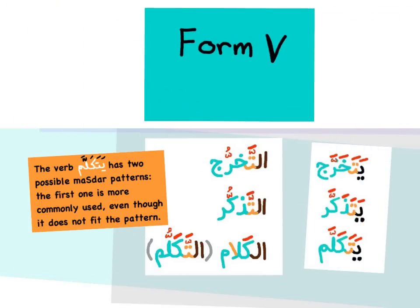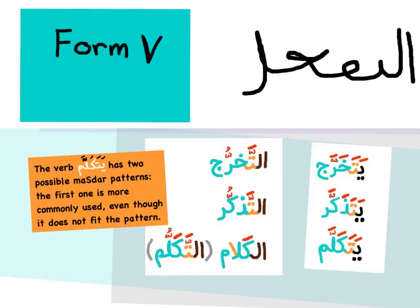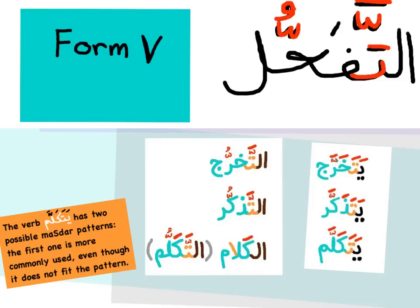Form 5 Mazdar pattern is Al-Tafa'ul. Examples: يتخرج (he graduates) → التخرج (Al-Takharruj — to graduate/graduation); يتذكر (he remembers) → التذكر (Al-Tadhakkur — to remember/remembering). يتكلم (he speaks) has two possible Mazdar patterns. The first, Al-Kalam (speaking/talking), is most commonly used even though Al-Takallam fits the Al-Tafa'ul pattern more precisely.